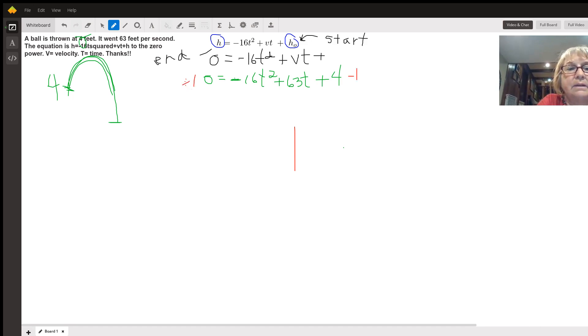And so when I do that, zero times negative one is still going to be zero. So I'm still going to have a zero over here, but over here, every value is going to change. Now I'm going to have a positive 16 T squared. I'm going to have a negative 63 T and I'm going to have a negative four. Now it'd be much easier to factor now that I have a positive leading coefficient.